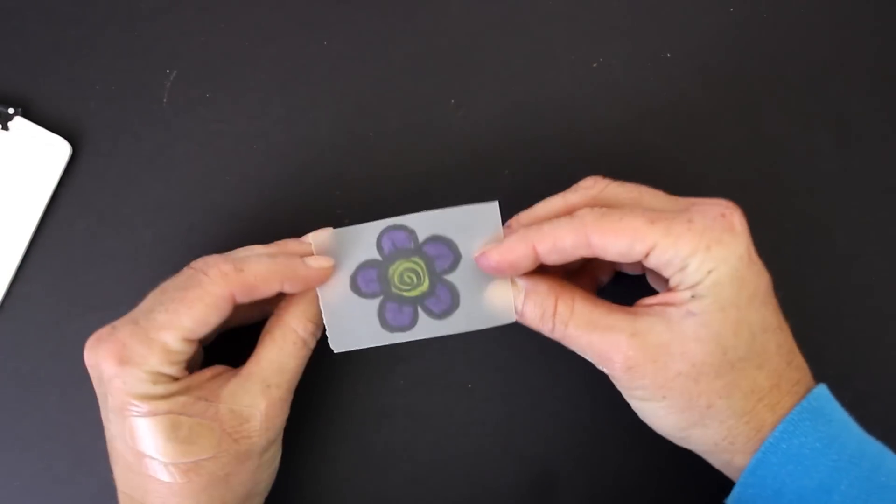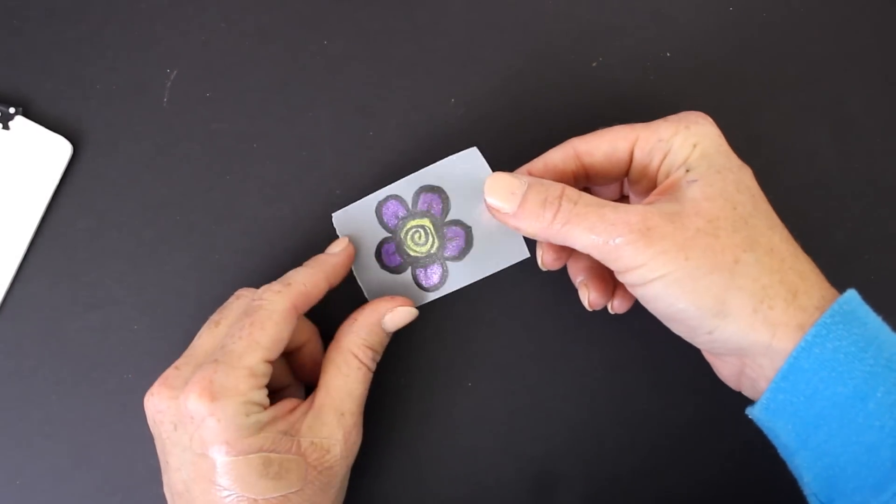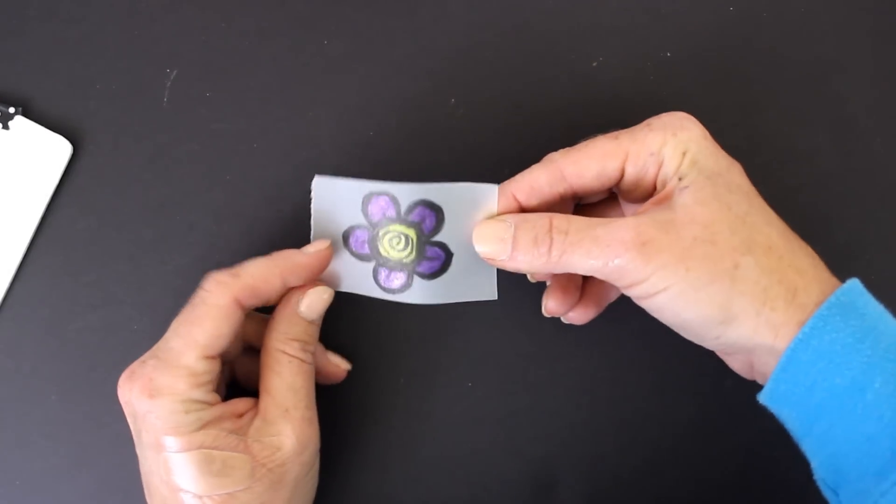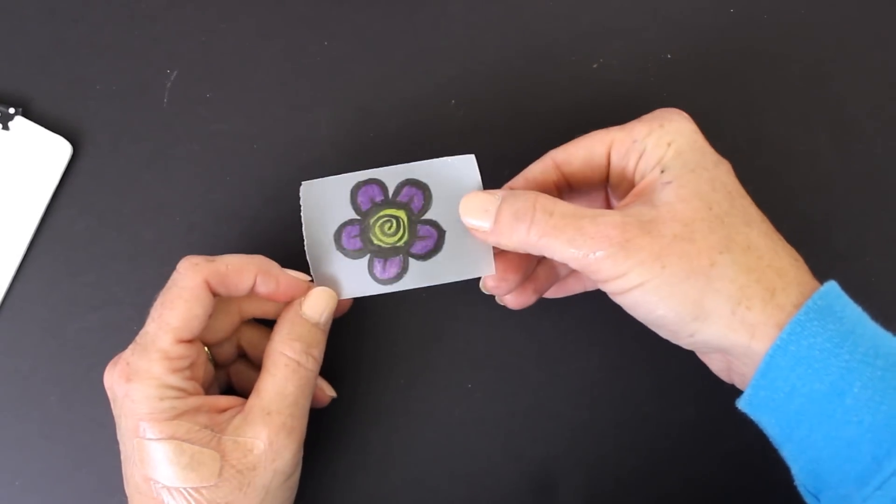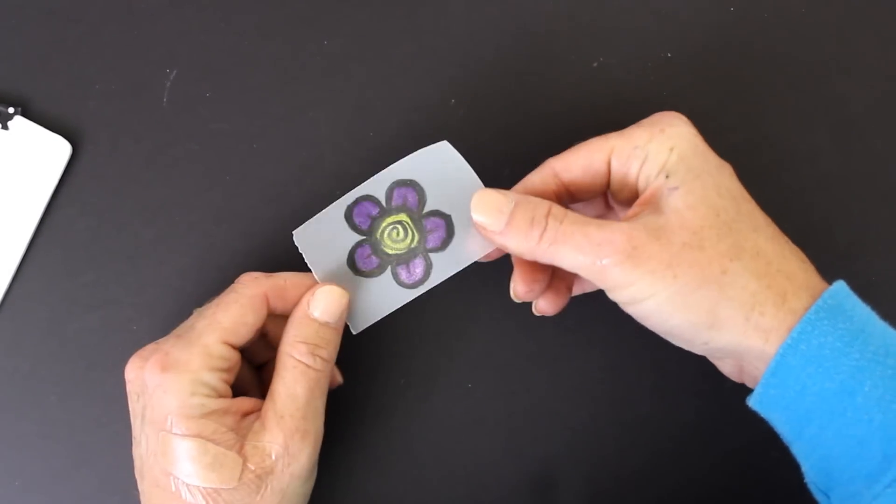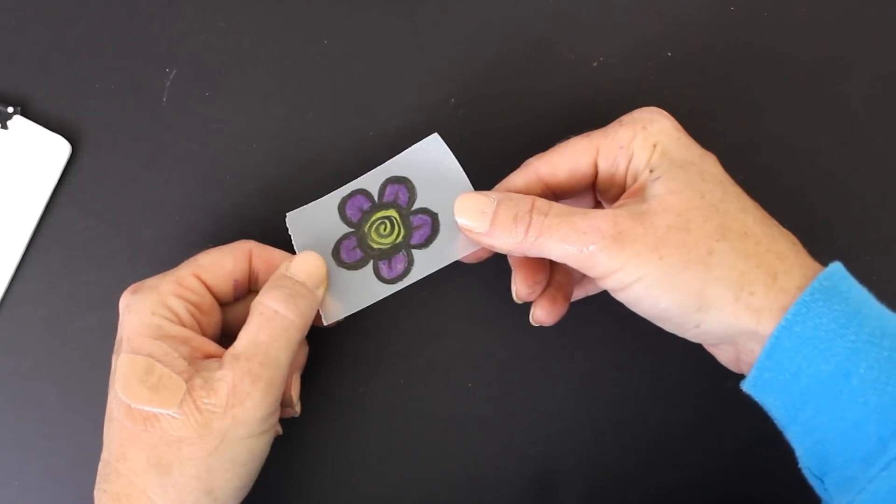This was vellum, and what I found interesting is that it didn't really wrinkle or warp the paper. A lot of times if you use a water-based media, which is what this is, on paper it will make it curl, but notice there is no curling and wrinkling on that vellum. Pretty cool, huh?